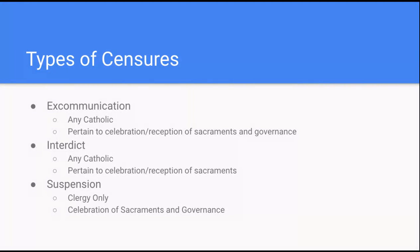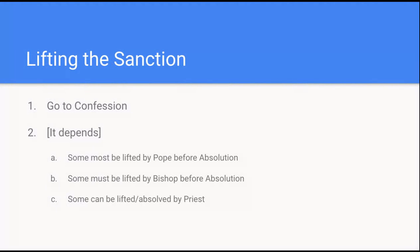And then finally, suspension. Suspension is a special type of censure that only applies to clergy, and it usually means it forbids them to celebrate the sacraments. Finally, what do you need to do to lift the sanction? First of all, you need to go to confession. However, before you can receive absolution, sometimes the canonical penalty must be lifted by the pope. Other times it can be lifted by the bishop. And in a few instances, the canonical penalty can actually be lifted by the priest who is hearing the confession. It really just depends, and that's why you should go to confession to figure out exactly what must take place.